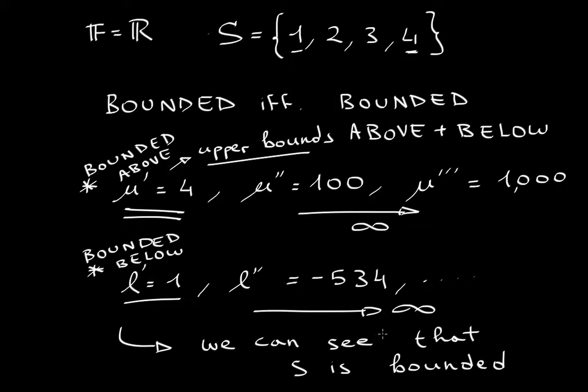So one thing that you want to note is that a set S is bounded if and only if there exists an a and a b so that. Let me just write this another way. We know that S is the set 1, 2, 3, 4.